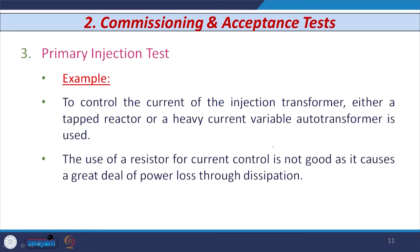To control the injection transformer, most primary injection test kits use a tap reactor. Sometimes a heavy-current variable auto transformer is also used, but most of the time a tap reactor is used. A resistor is not used because it would cause power loss through dissipation, so the tap reactor is used instead to inject the current into the coil of the relay.